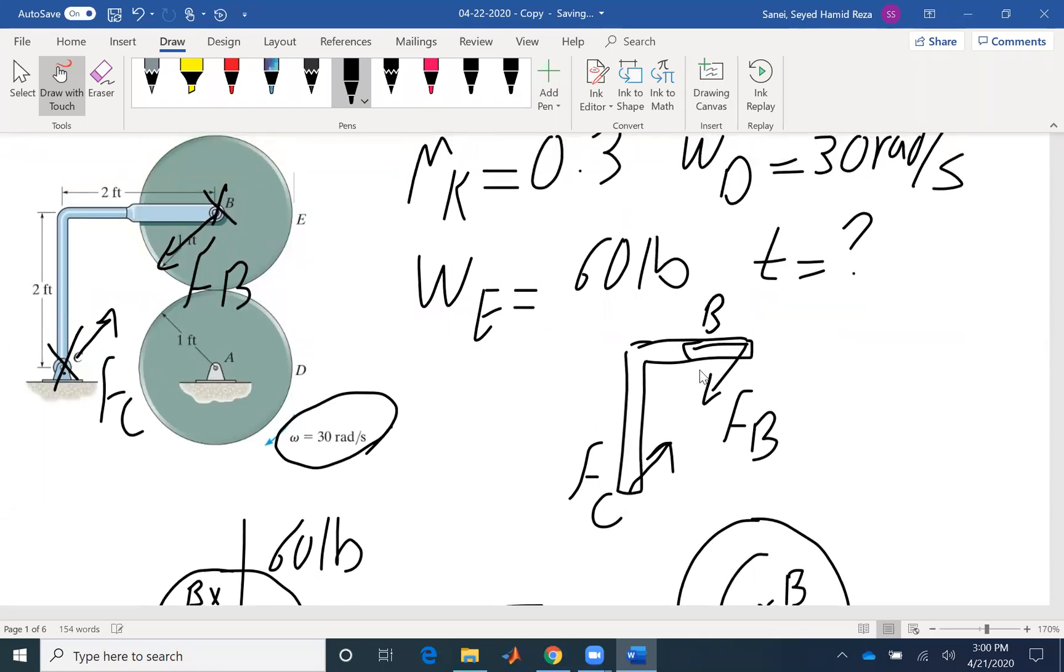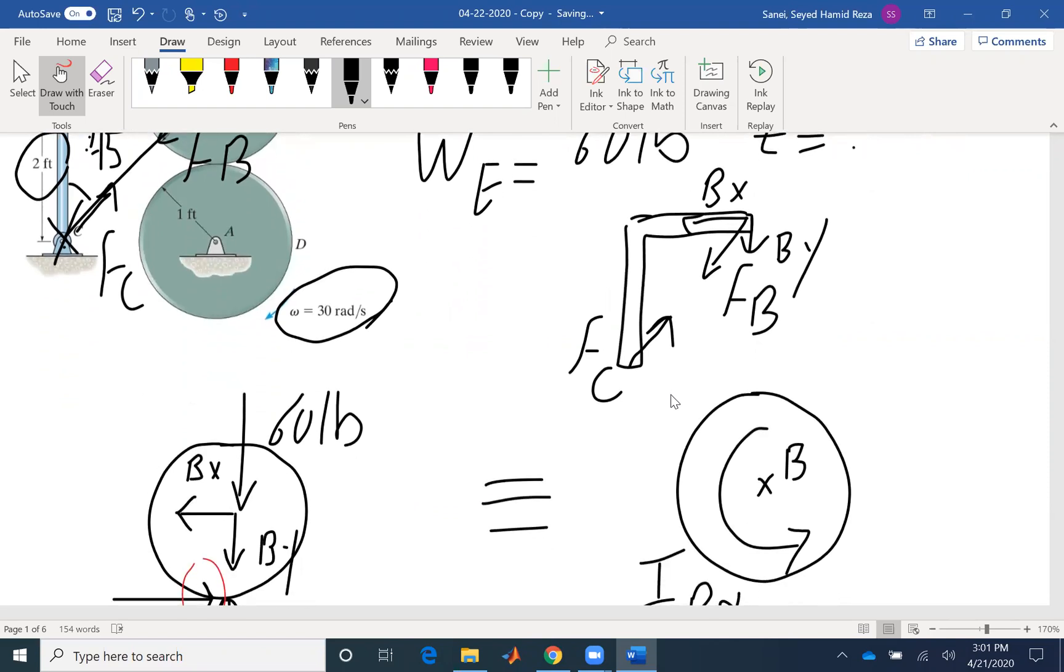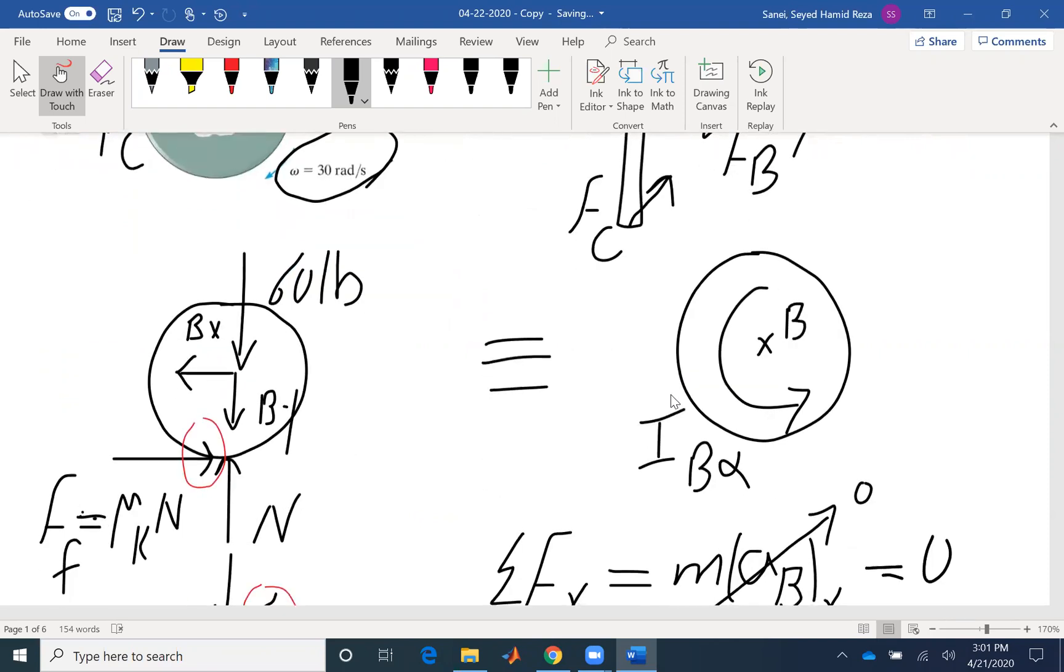We don't have two unknowns. BX and BY represent one unknown for us. According to the geometry, this is two feet, this is two feet. So, this angle would be 45 degrees. I have FB, BX would be FB·cos(45°) and BY would be FB·sin(45°).